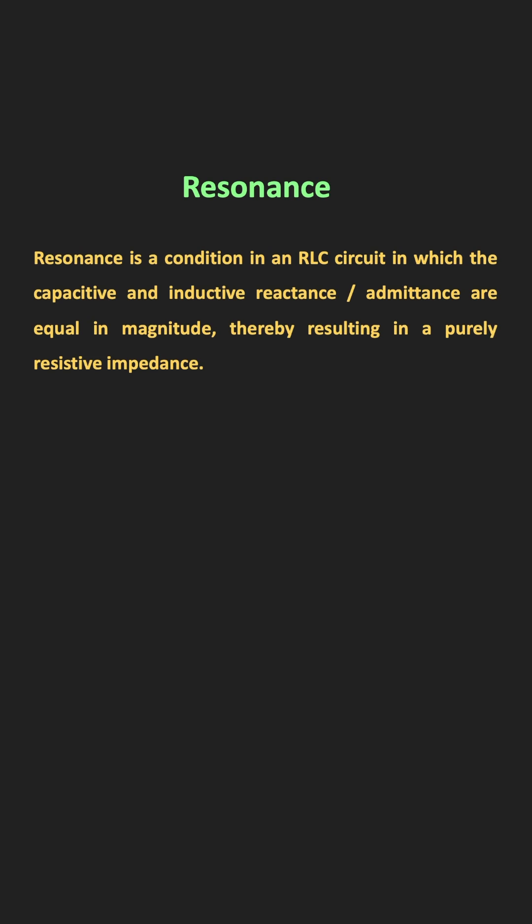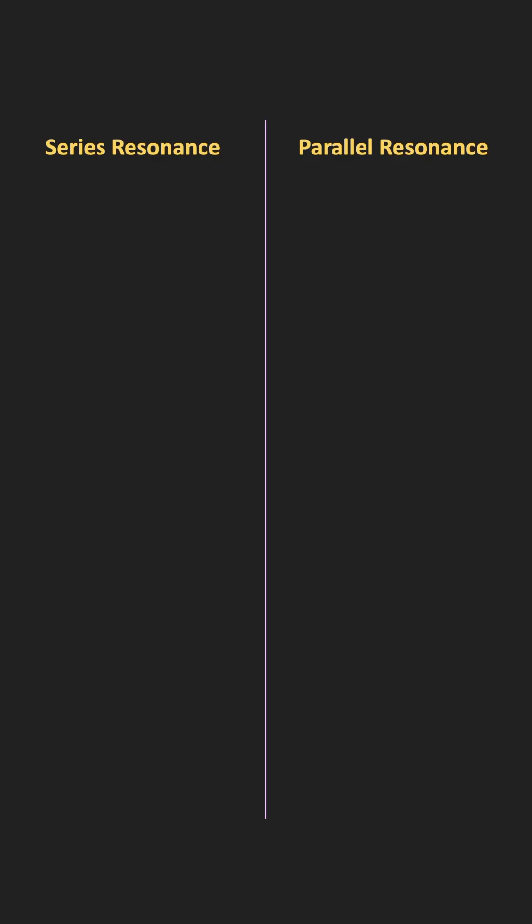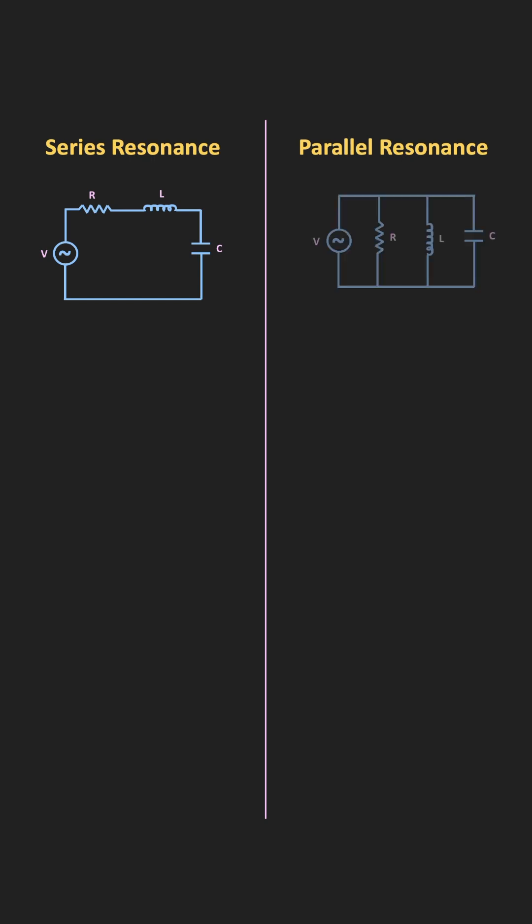Series resonance can be seen in the series RLC circuit where the inductive and the capacitive reactances are connected in series. Similarly, parallel resonance is seen in the parallel RLC circuit where the capacitor and the inductors are connected in a parallel connection.